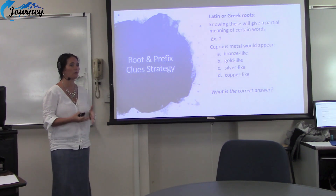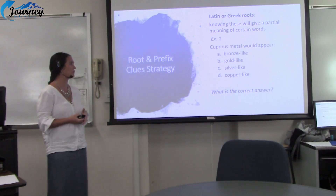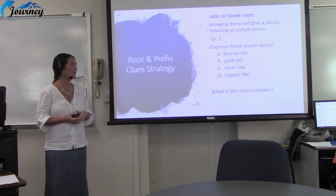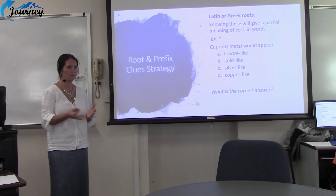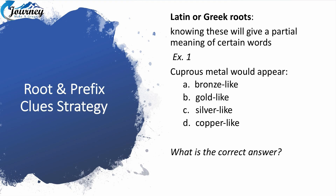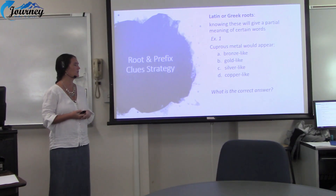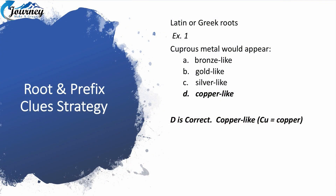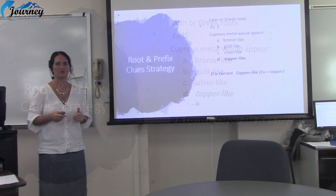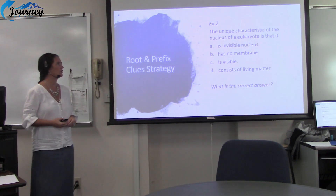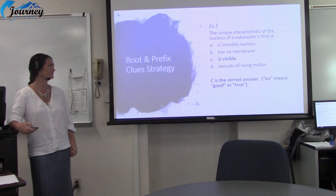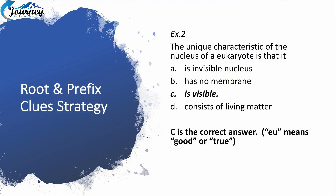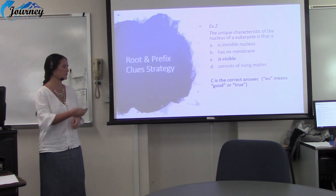Another strategy is to look at the root word. If you know any of your Latin or Greek roots, that will help you by giving a partial meaning of certain words. For example, Cu equals copper — you are correct. Here's another example: 'The unique characteristics of the nucleus is visible.' C is the correct answer. E-U means good or true. C is the correct answer on that one.